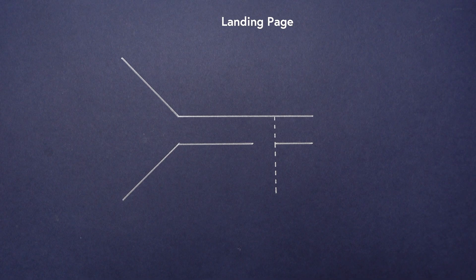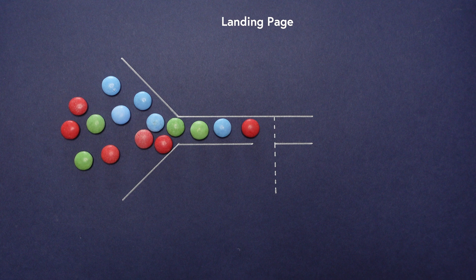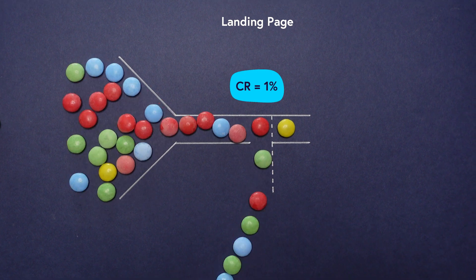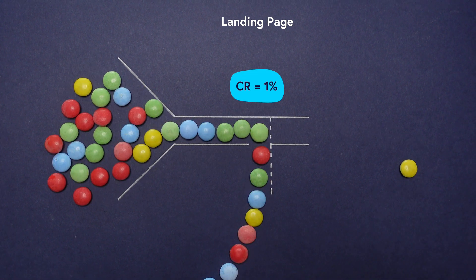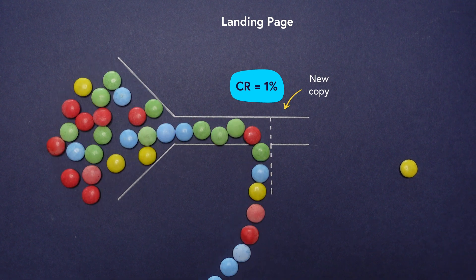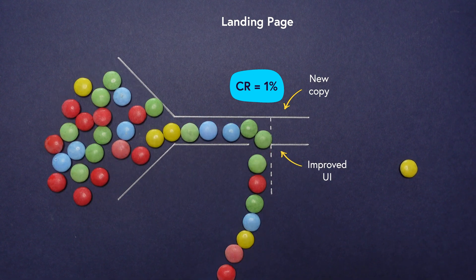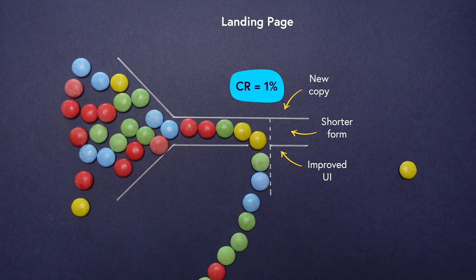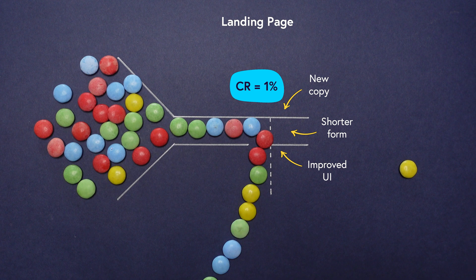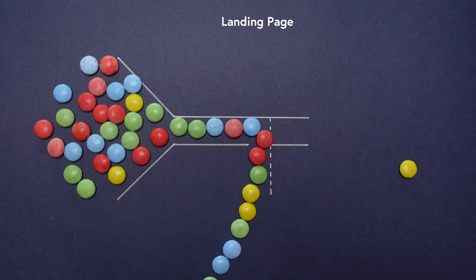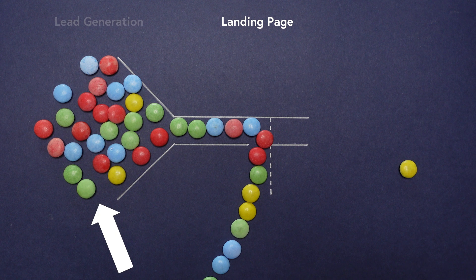Let's explore what I mean with smarties. Imagine you're responsible for optimising a landing page. It's converting new customers at a rate of about 1% and you'd like to increase this. Now you've been A/B testing this thing for months — you've changed the copy, you've changed the UI, you've changed the form, and nothing is working. But what if the problem doesn't lie on the landing page itself? Sometimes the most effective way to improve a conversion rate further down the funnel is to make changes higher up the funnel.